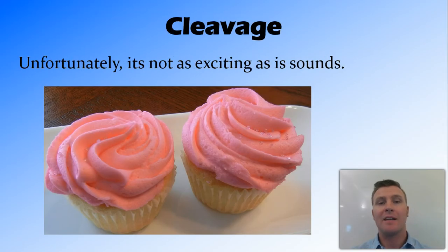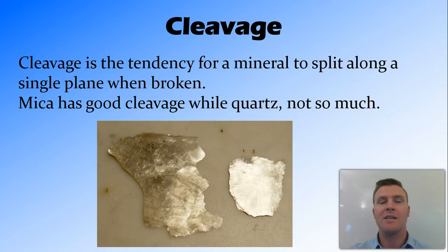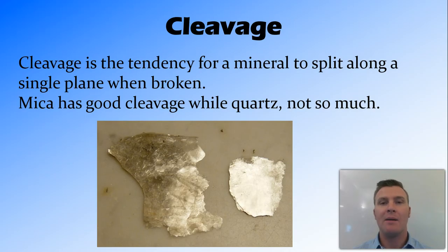The next thing we'll talk about is cleavage, and unfortunately it's not as exciting as it sounds. When we're talking about cleavage, we're looking at the tendency for the mineral to split along a single plane. For example, mica is something that has very good cleavage — when it breaks, it breaks into thin sheets that you can see here.